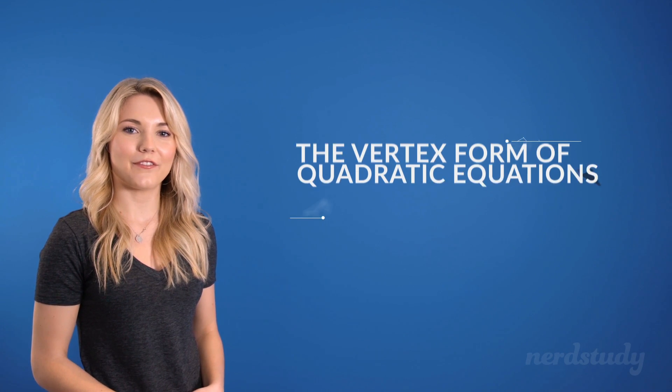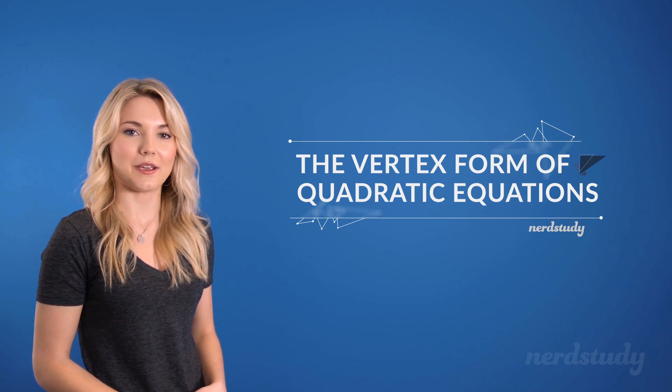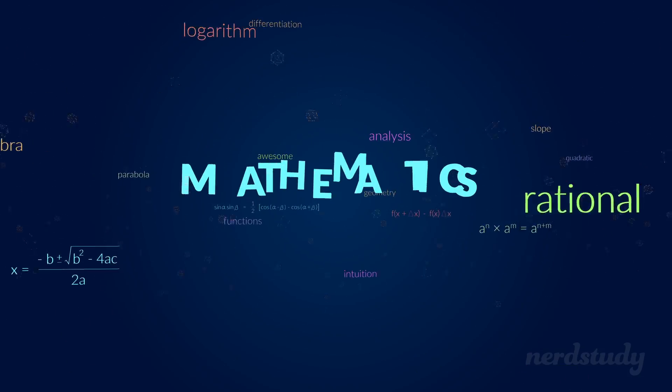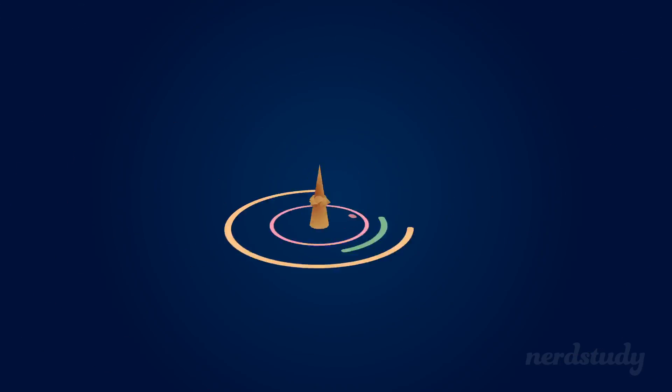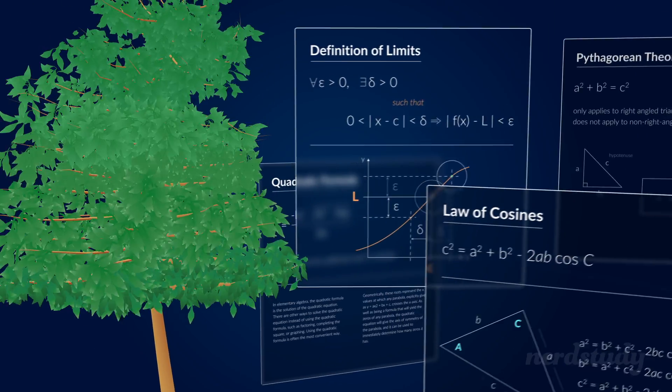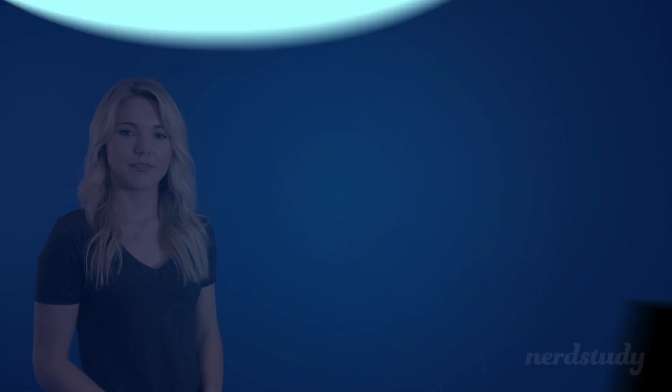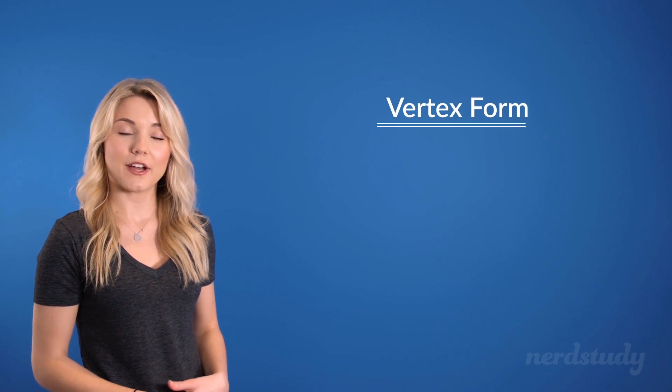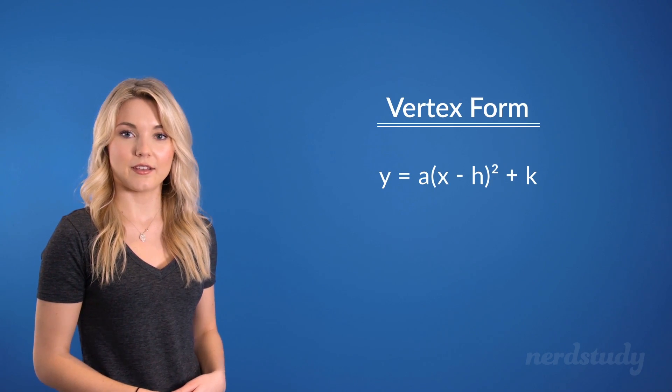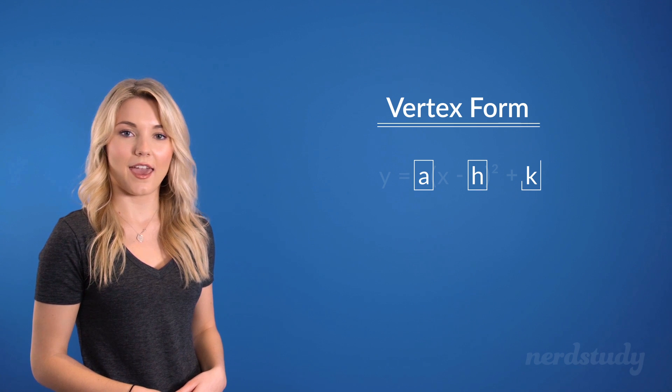Today, we're going to be learning about the vertex form of a quadratic equation. The vertex form of a quadratic equation is written like this, where a, h, and k are numbers.